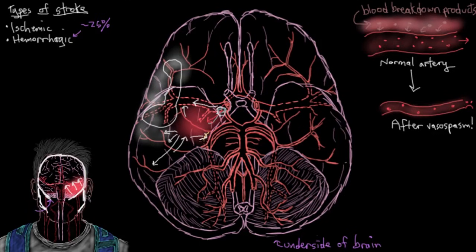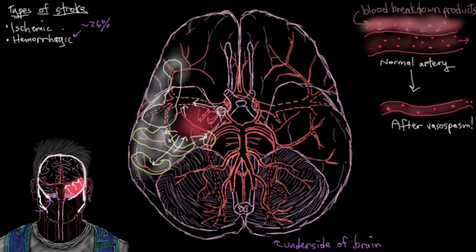So if all of these blood vessels clamp down in response to irritation by blood breakdown products and don't deliver enough blood to the brain tissue in their area, then our patient would have developed a secondary stroke. You really have to be careful of vasospasms causing secondary strokes after an initial hemorrhagic stroke.